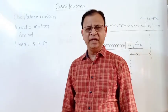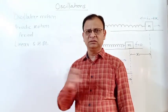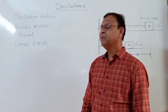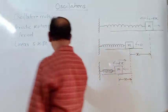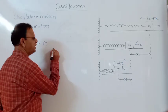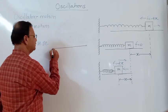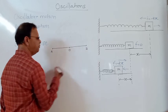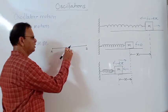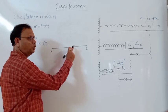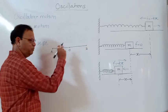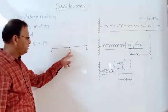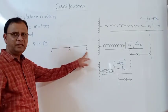Oscillatory motion is when a body moves along the same path to and fro. For example, a body moves along a straight line where O is the mean position and A and B are the extreme positions. If the body moves from O to B, then A to O, then O to B, and back again, it performs oscillatory motion. O is the mean position and A and B are the extreme positions.